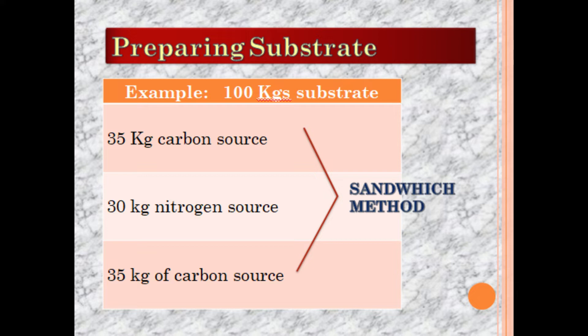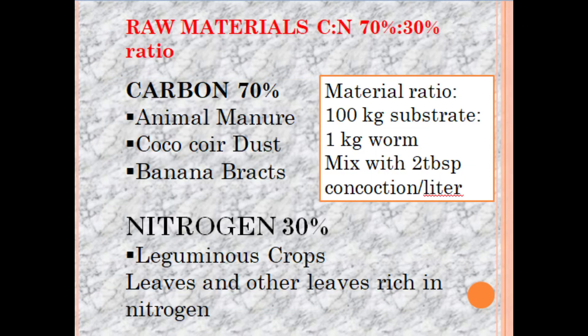The substrate is the material where we are going to grow and produce our African night crawlers. It is the food for the earthworm, which converts the substrate into vermicompost or vermicasts by eating it. The ratio we need is 70% carbon materials and 30% nitrogen materials to get 100% substrate mixture.